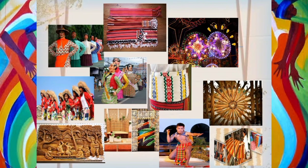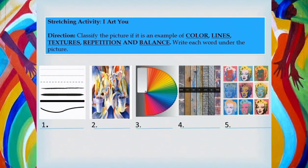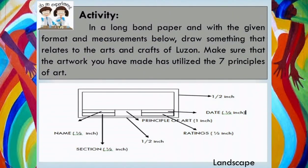That concludes the arts and crafts from the highlands and lowlands of Luzon. Let us have our first activity — a stretching activity. Direction: Classify the picture if it is an example of color, lines, textures, repetition, or balance. Write each word under the picture. For the next activity: on a long bond paper, with a given format and measurements, draw something that relates to the arts and crafts of Luzon. Based on our discussion, pick one and choose. Make sure that the artwork you have made has utilized the seven principles of art.